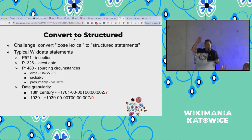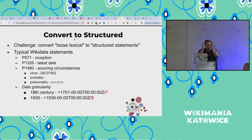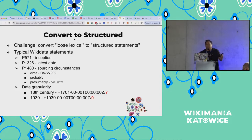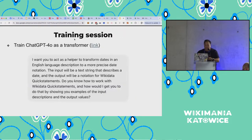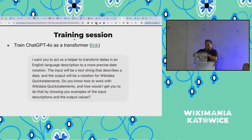How many people here have used Quick Statements before in Wikidata? A lot of you know of it. So I said to GPT: 'I want you to act as a helper to transform dates in an English language description to a more precise date notation. The input will be a text string describing the date, and the output will be a notation for Wikidata Quick Statements.' First I asked: do you know how to work with Wikidata Quick Statements? The cool thing is it doesn't really need to know a lot about Quick Statements — that's what's weird about transformers, you just say input, output, input, output, give it lots of examples, and some kind of auto-magic happens.